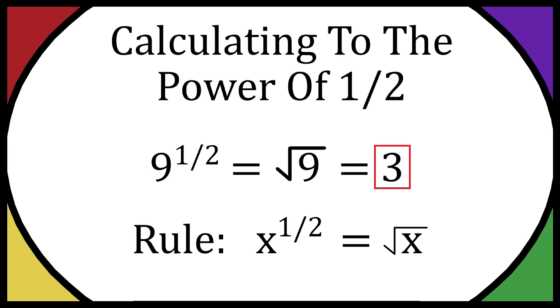Now the general rule is: if you take x to the power of a half, that's going to be equal to the square root of x. So anything to the power of a half is just going to be the square root.